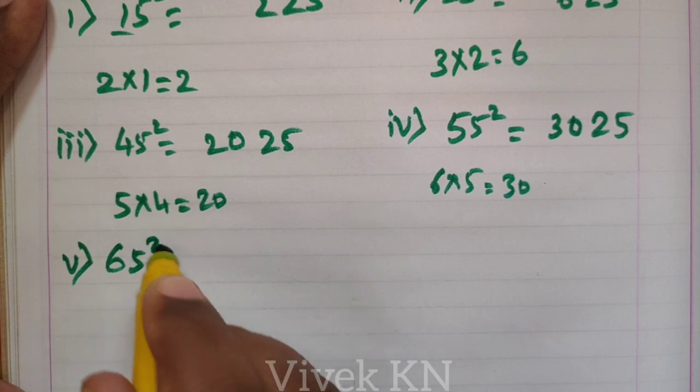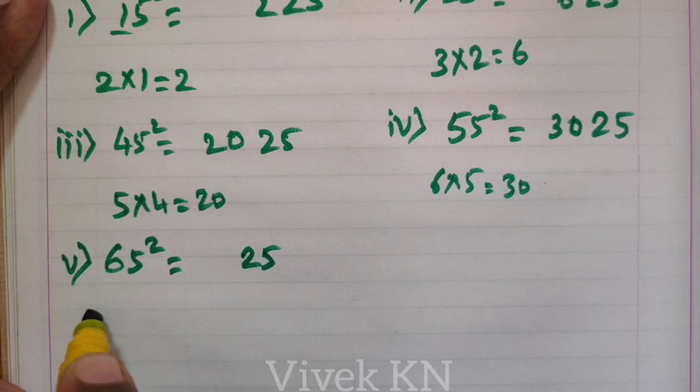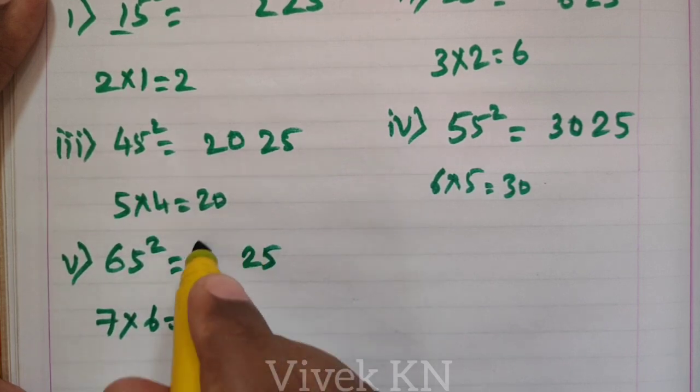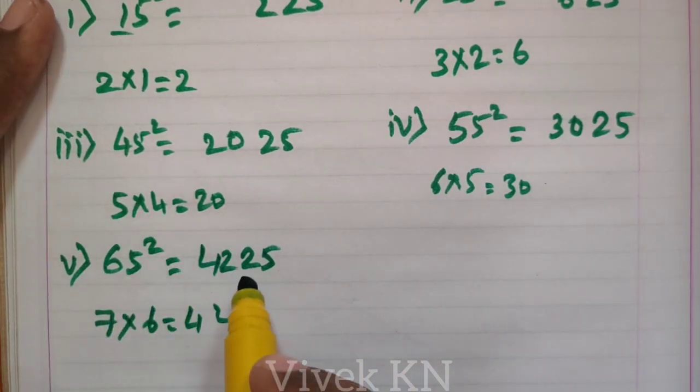Next, 65 square. 5 square is 25. The number that comes after 6 is 7. 7 into 6 equals 42. So, the value of 65 square is 4225.